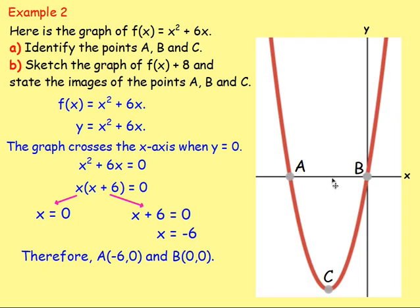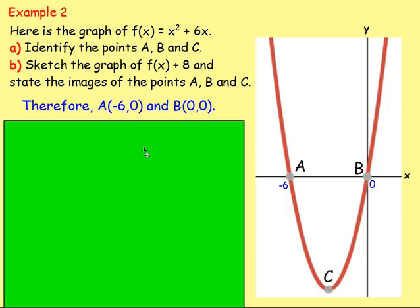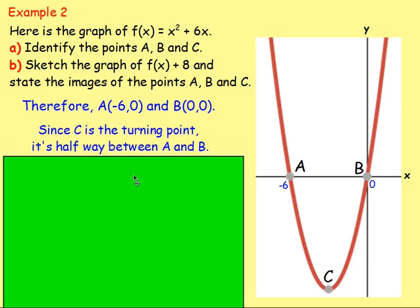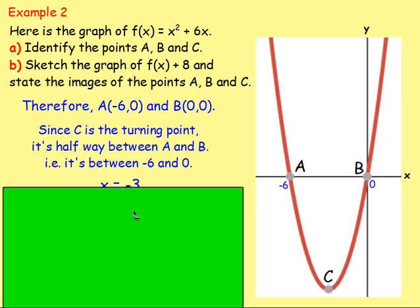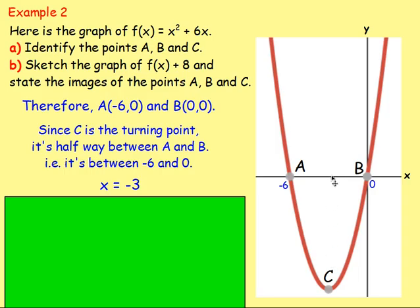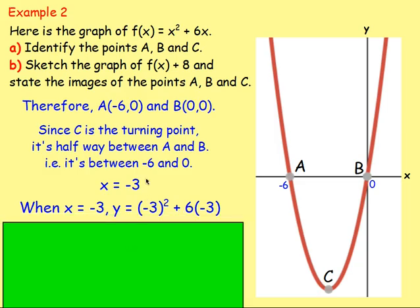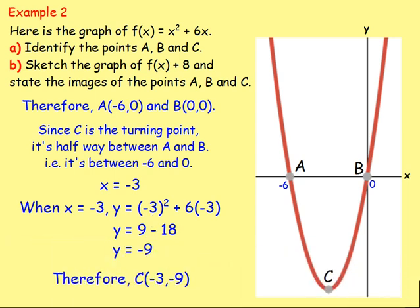To find point c — the turning point — remember that a quadratic is symmetrical, so c is halfway between a and b. Halfway between negative six and zero is negative three, so the x value of c is negative three. To find y, substitute x equals negative three into the equation: negative three squared plus six times negative three equals nine minus eighteen, which equals negative nine. So point c is negative three, negative nine.